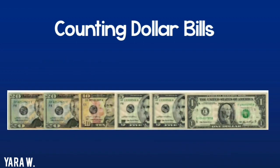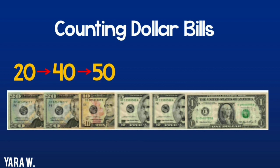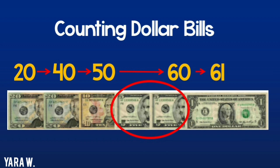Look at this example. I will start by 20, and then 20 more, that's 40. Then I will skip count by 10, that's 50. Now I have two $5 bills, as you can see, I will skip count by 10, that's 60. And then 60 and 1 is 61, so the total amount is 61.